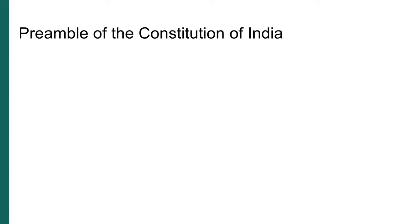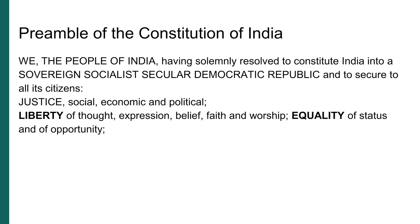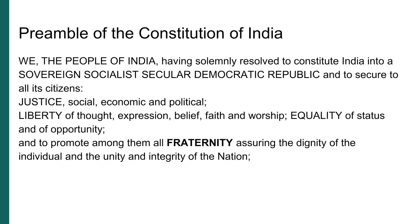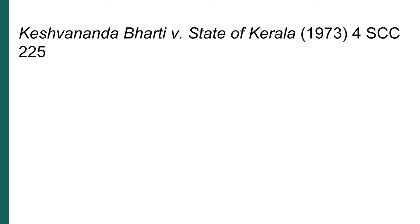Before we start talking about these principles of constitutional law, we need to acknowledge that the preamble of our constitution represents the spirit of our democracy. It lays down four basic principles of political society in our country: justice, liberty, equality and fraternity. It recognizes India as a sovereign socialist secular democratic republic. To understand the spirit of our constitutional values listed in the preamble, we will start our discussion with the rule of law.